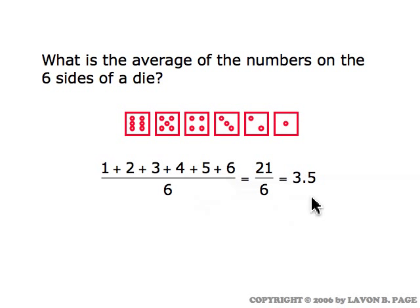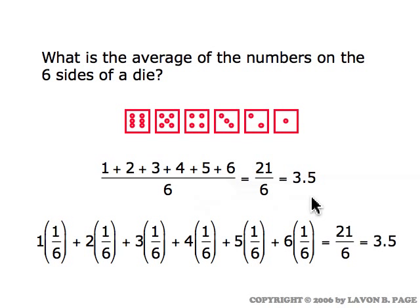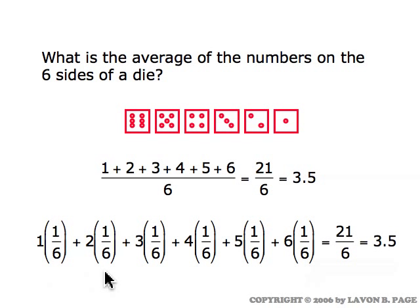Another way of looking at that calculation, which involves probability, is to think about taking all the different outcomes possible when you roll the die. You'll get one, two, three, four, five, or six. We're multiplying each of those outcomes times its probability of occurrence. If the die is symmetric and balanced, then each outcome has probability one-sixth. When you multiply each outcome times its probability, you're really doing the same arithmetic as when you just average the numbers on the die, and you again get three and a half.